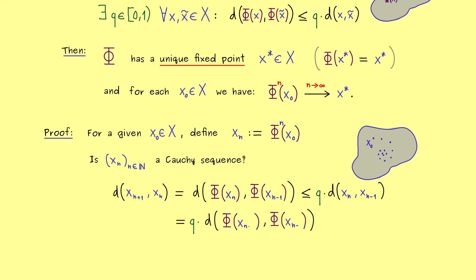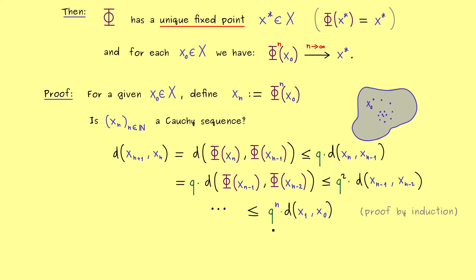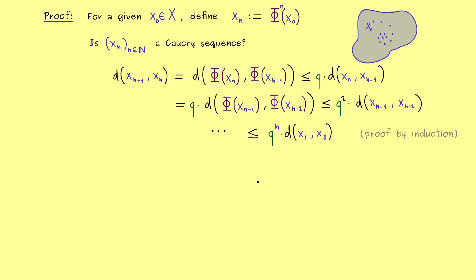So the first component is xₙ₋₁ and the second is xₙ₋₂. Applying the contraction property again gives us q² times d(xₙ₋₁, xₙ₋₂). We can repeat this calculation as many times as needed, and in the last step what we get is q^n times the distance between x₁ and x₀. These dots represent a formal proof by induction, and the result is a very nice formula: d(xₙ₊₁, xₙ) ≤ qⁿ · d(x₁, x₀), which holds for every n ∈ ℕ.